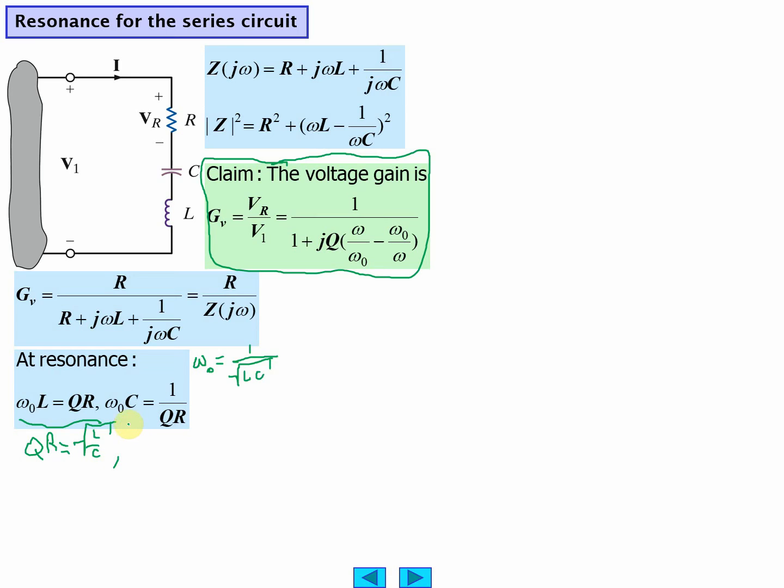And here you have reciprocal QR equals omega naught C, which is square root of C over L, and they are reciprocals of each other, so we're happy.